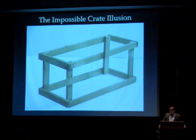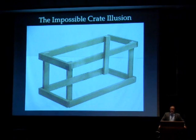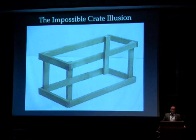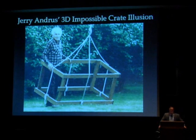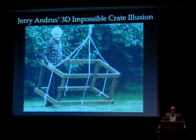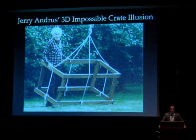The impossible crate illusion — you could say, that's an illusion in 2D. Anybody can fool the brain in 2D, with the board seemingly bending back and forth around from the front to the back and vice versa. Well, here's the impossible crate illusion in 3D. That's my friend Jerry Andrus, the late Jerry Andrus. He's a professional magician who specialized in designing large three-dimensional illusions that fool the brain.